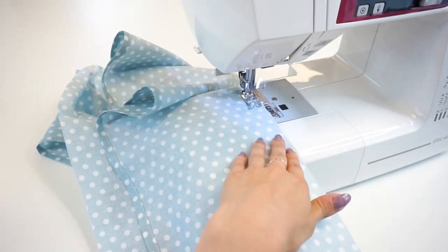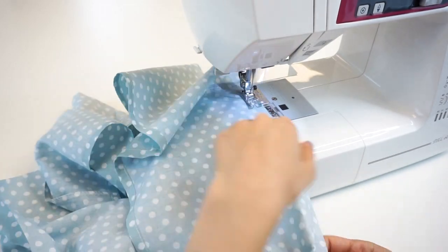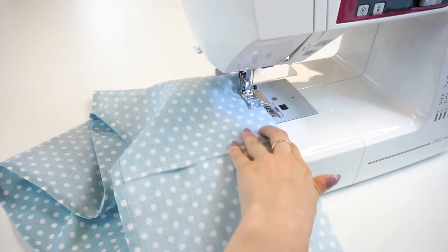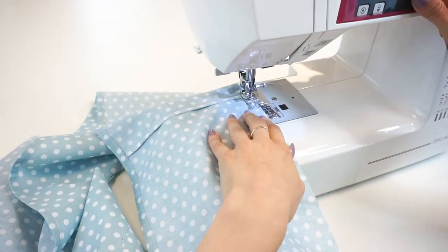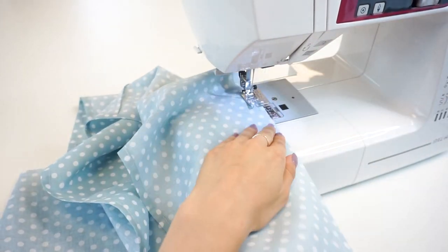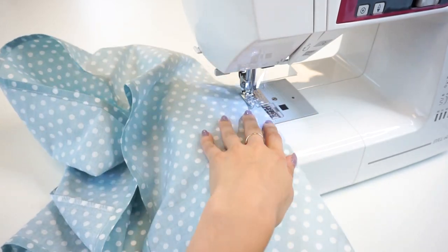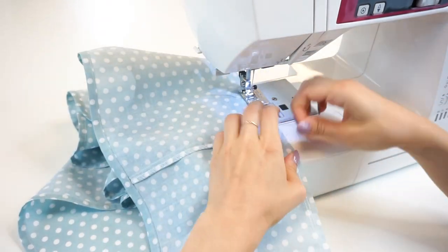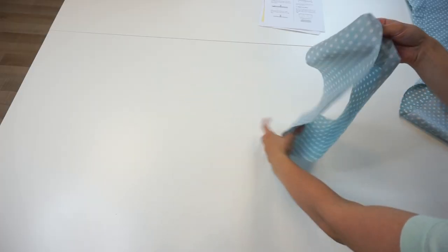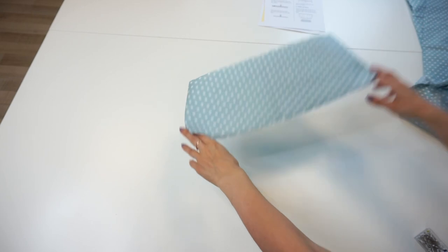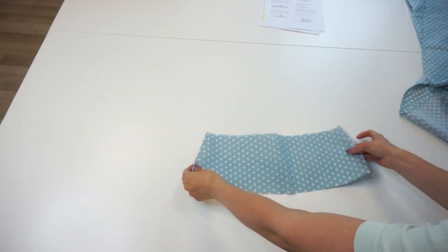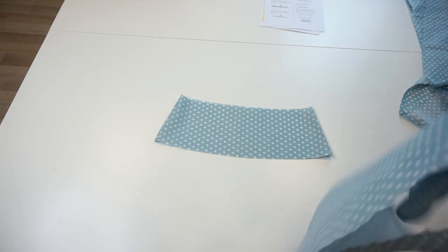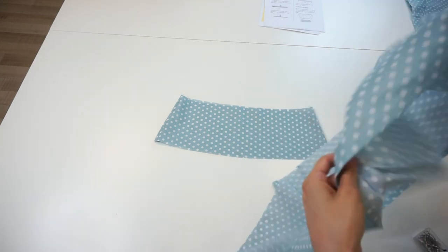Do this step with all four frill panels. Take the first skirt panel and turn it so the right side is towards the outside. Take the first frill panel.